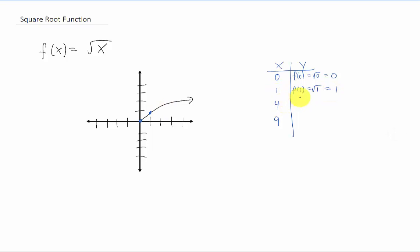Not so interesting so far. But if we plug in x equals 4, our function gives us the square root of 4, which is 2, which is why I picked 4 in the first place. And we have the point (4, 2) right there.